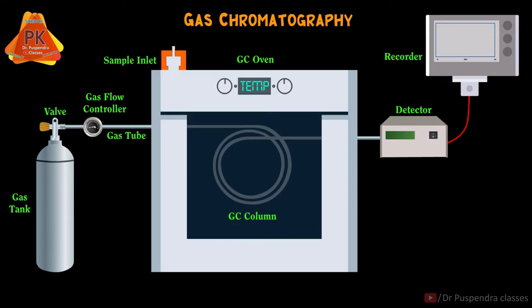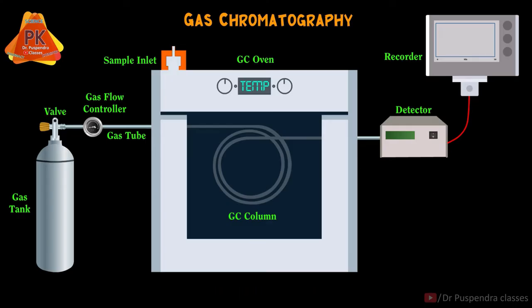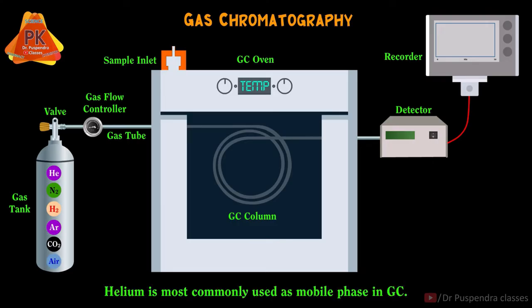The first part is the gas tank, which is made up of stainless steel and contains condensed gas used as a mobile phase. These gases may be helium, nitrogen, hydrogen, argon, carbon dioxide, and air. Amongst all these gases, helium is most commonly used as a mobile phase in GC.